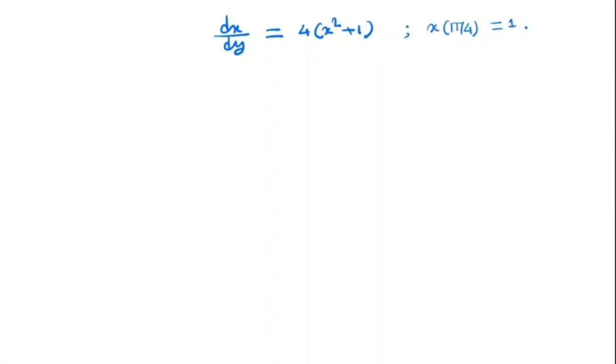Hi everyone, welcome to my channel. Now we will try to solve the following initial value problem: dx/dy is equal to 4 times x squared plus 1, with the initial condition x of pi by 4 is equal to 1.